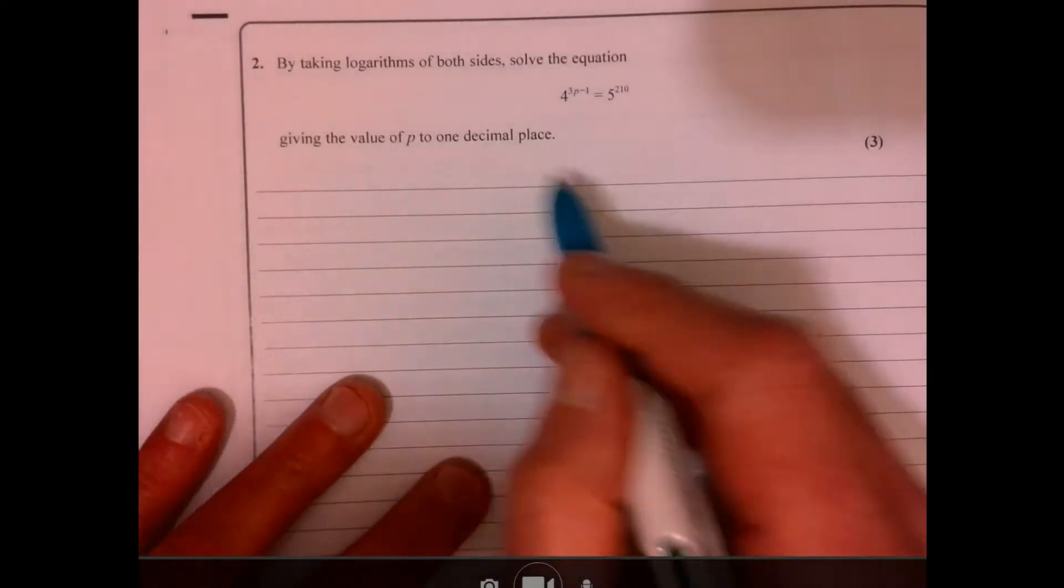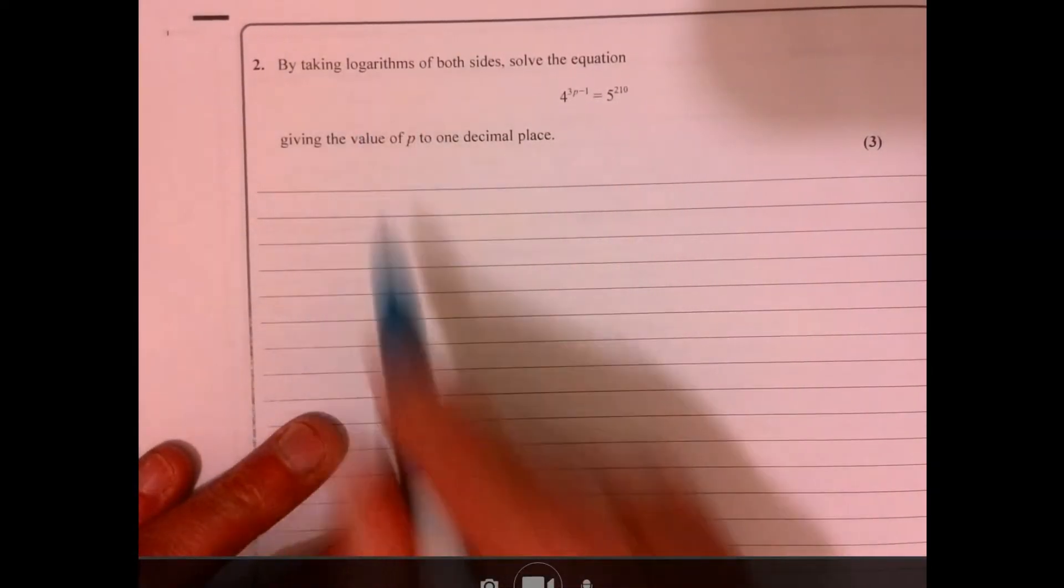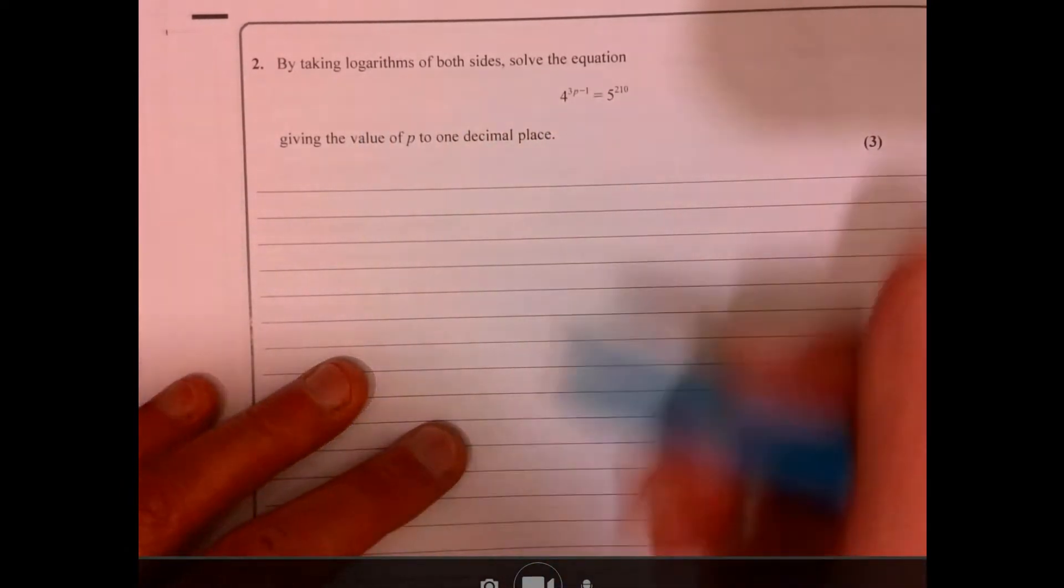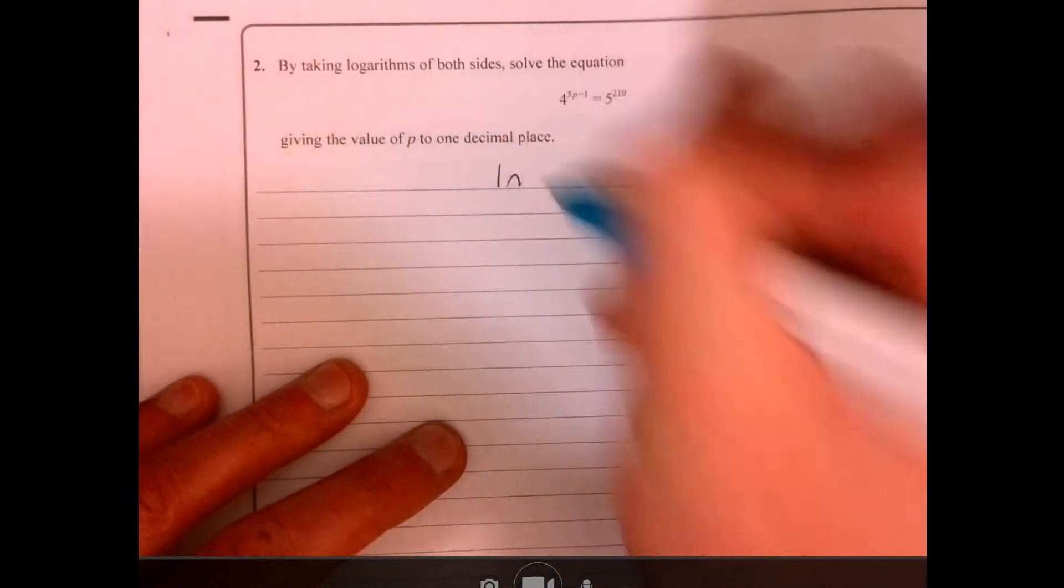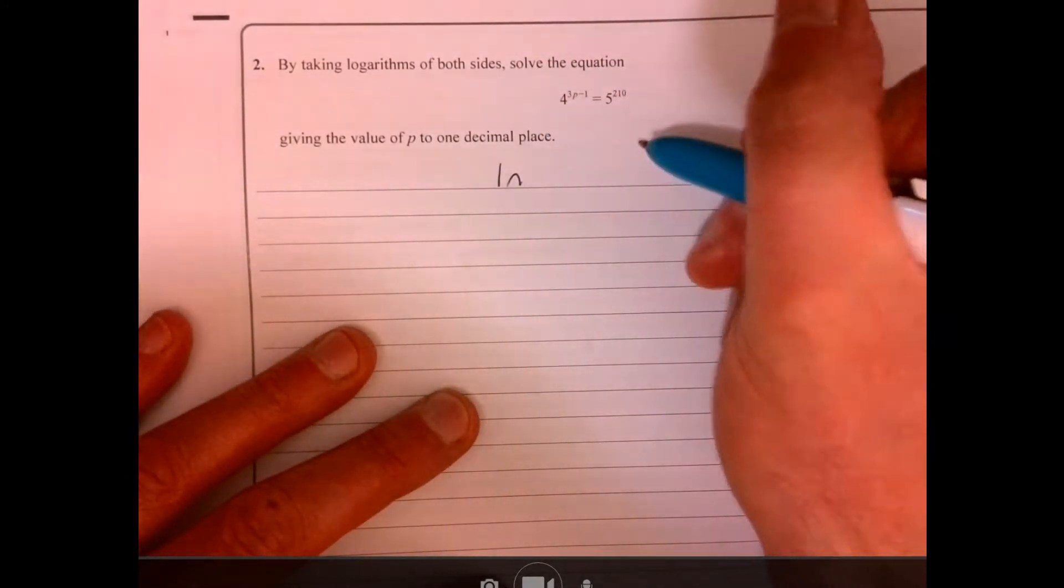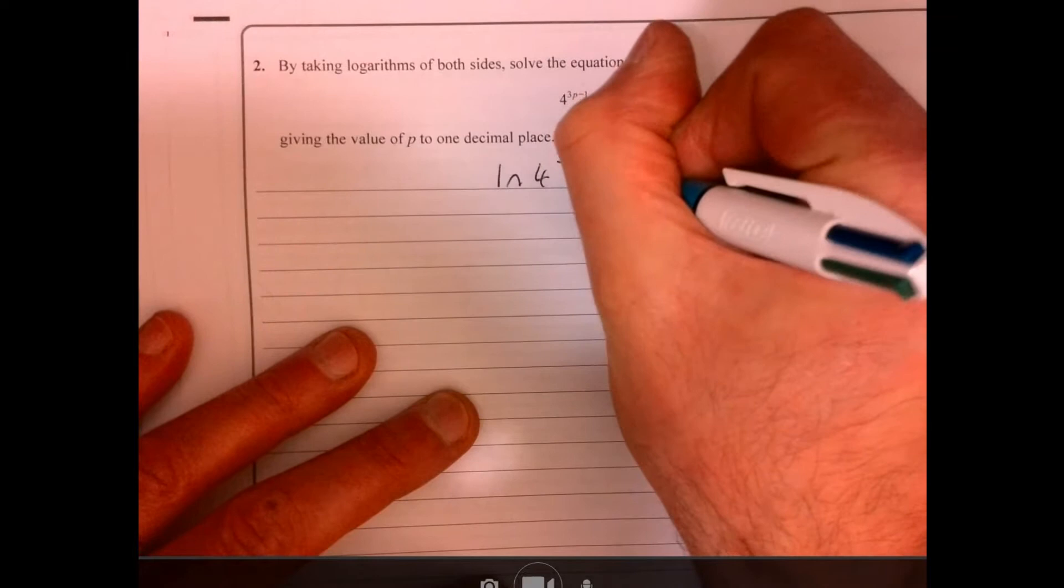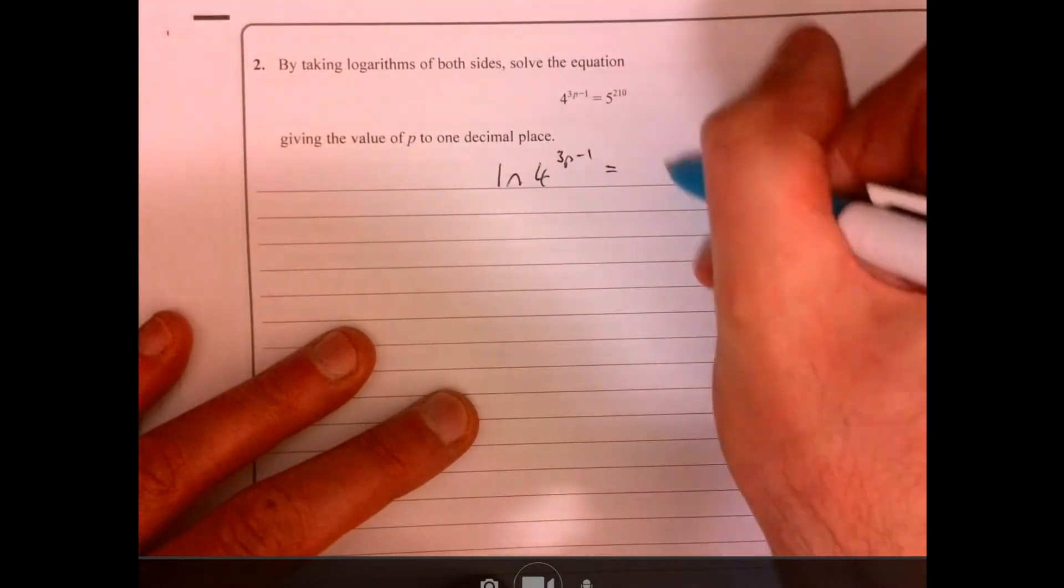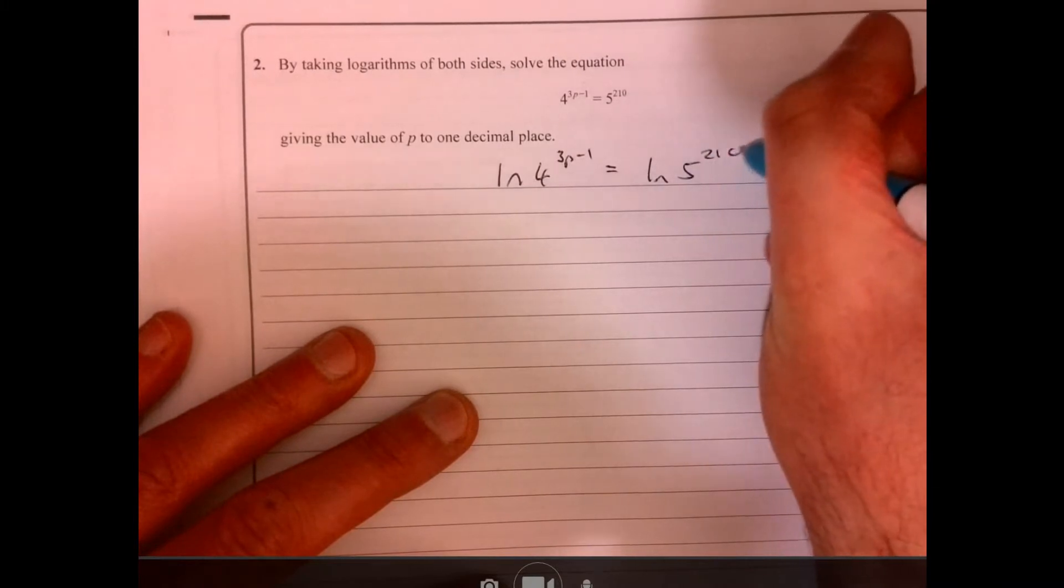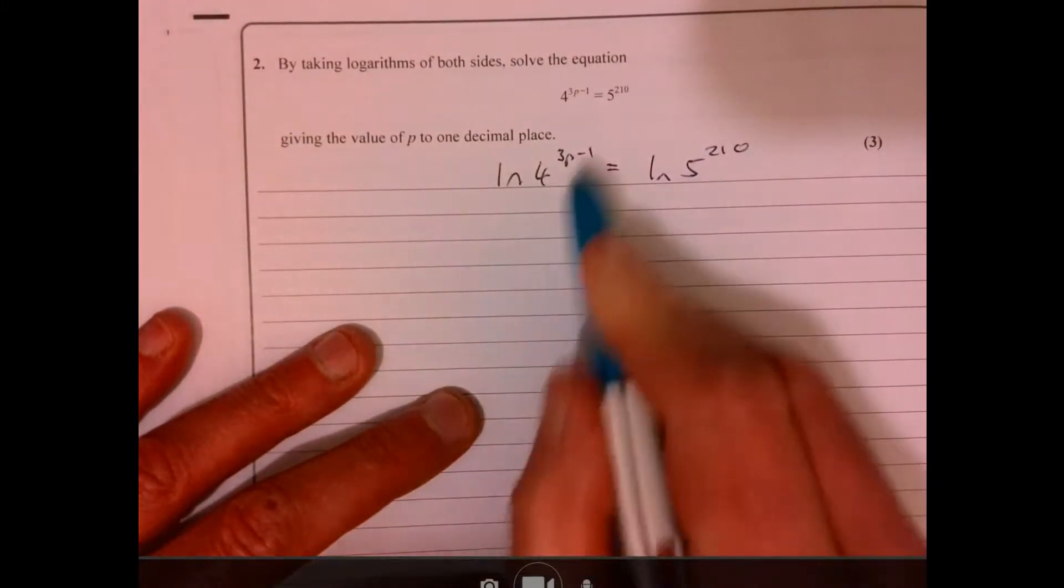Question two, so looks a little tricky, right? Things with logs usually puts people off, but it tells us take logs of both sides, so we can log both sides. It doesn't matter as long as when you do it you use the same base, otherwise it doesn't really matter.